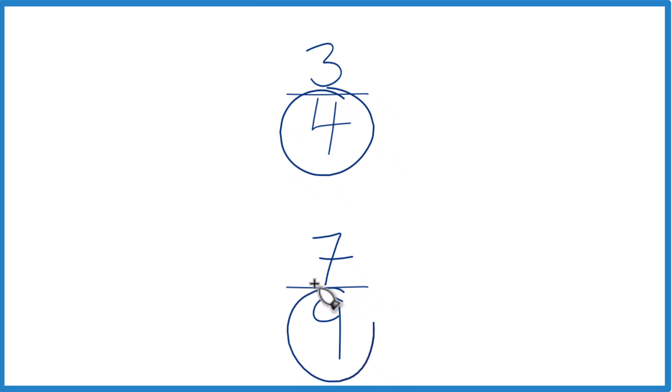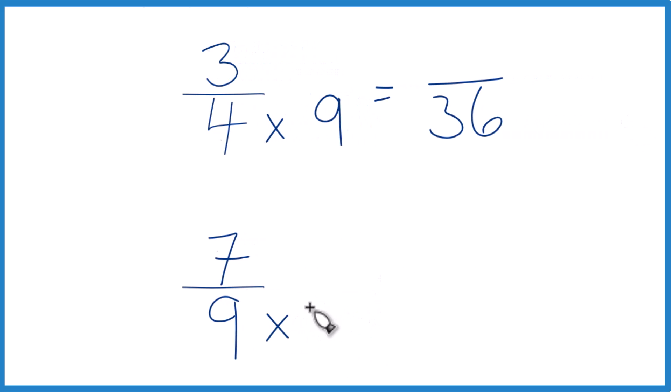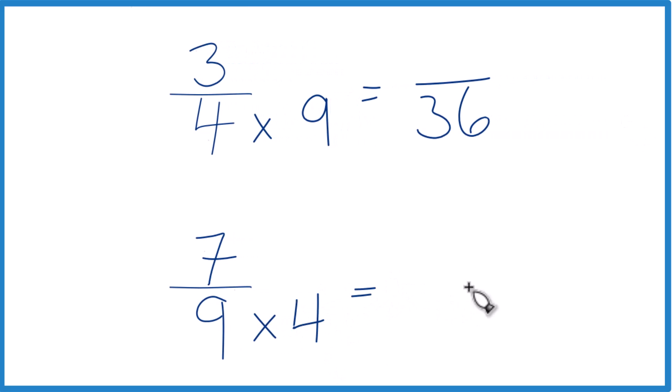Right now we have 4 and 9. But if this was the same, then we could just compare the numerators. So let's do that. Why don't we take 4 times 9, 4 times 9, that equals 36, and then down here 9 times 4, which equals 36. So now we have the same denominator.